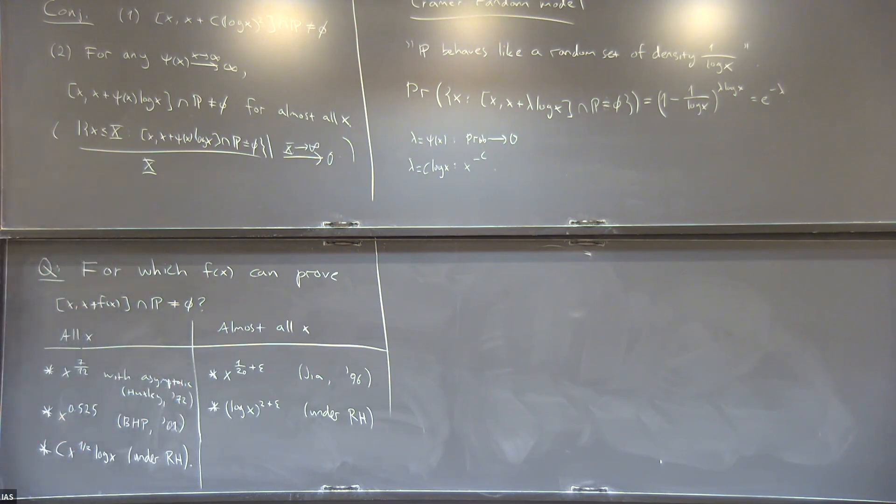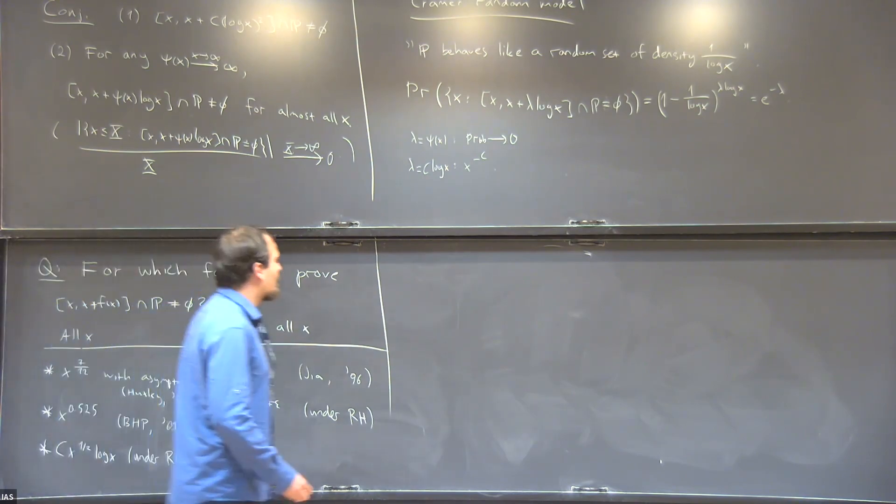As we can see from this table, the results are still quite far from the conjecture, in particular, the unconditional results. As usual in mathematics, if you can't solve the problem, you relax it until you can solve it. And that's where the almost primes come into play.